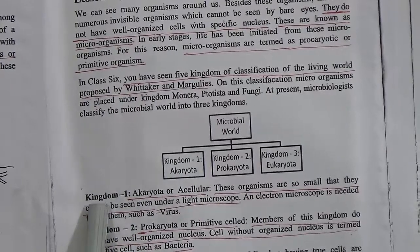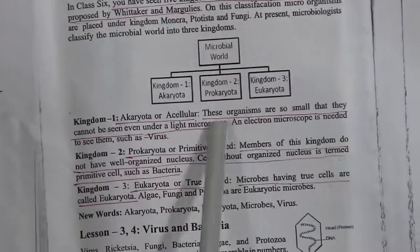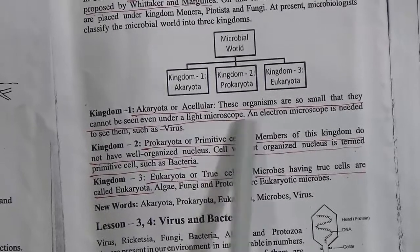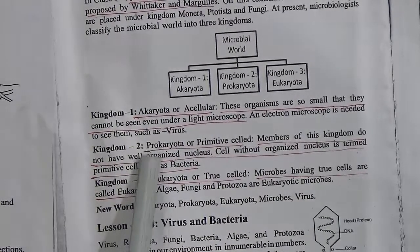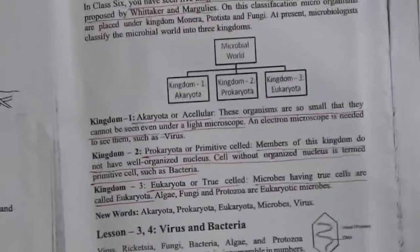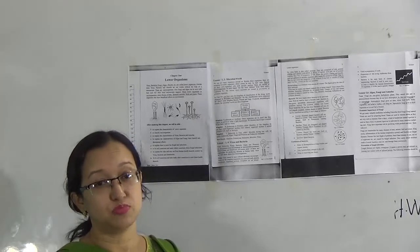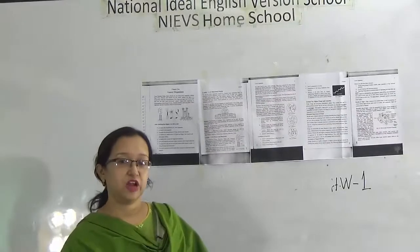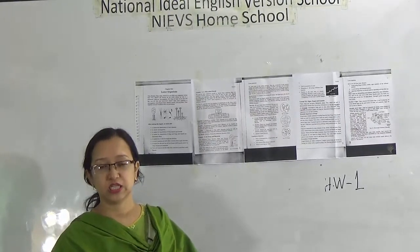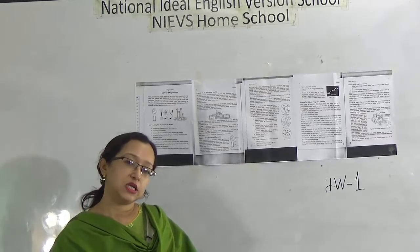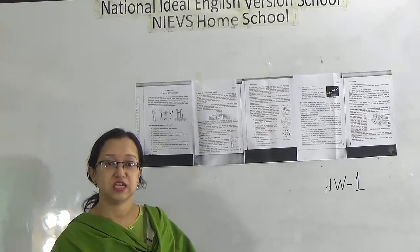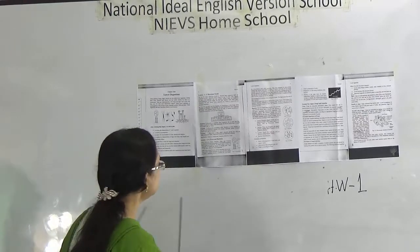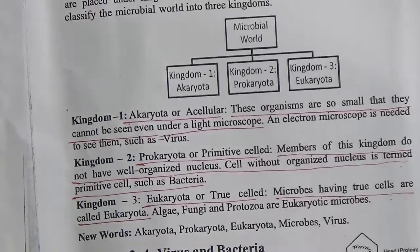Kingdom number one, Acariota or acellular: these organisms are so small that they cannot be seen even under a light microscope; an electron microscope is needed to see them — such as viruses. Electron microscopes are very high-range, costly instruments that work with the help of electricity and help to identify very small things. That is why they are called acariotic or acellular.